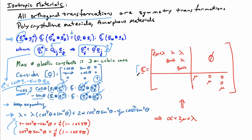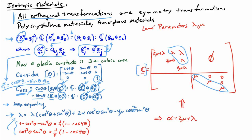If I write the elastic moduli in the six-by-six Voigt form, I end up with two mu plus lambda on the diagonal in the upper-left block. The off-diagonal elements are still lambda, and the diagonal elements in the lower-right block are still mu. There are now only two elastic constants to define the isotropic material. The two parameters, lambda and mu, are usually called the Lamé parameters. Mu has a special name — it's also known as the shear modulus for the material.